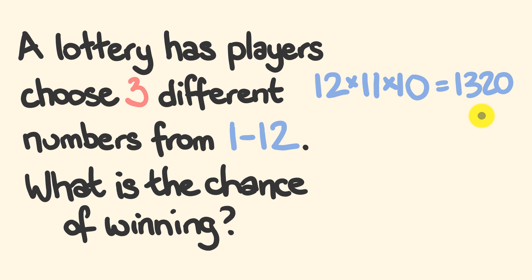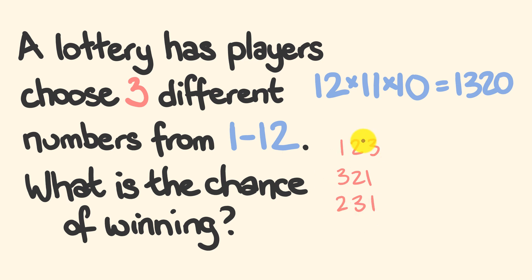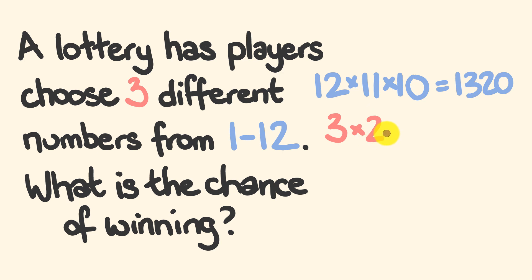We're almost there. What we're going to have to do is divide this by the number of different ways we could arrange the same three balls. Say the balls we chose were 1, 2, and 3 — this would be the same result as getting 3, 2, and 1, or 2, 3, and 1, and so on. So we work out how many ways we could arrange these three balls: starting with 3, we multiply down in descending consecutive order until we hit 1 — so 3 times 2 times 1. That equals 6. So 1,320 divided by 6 is 220.